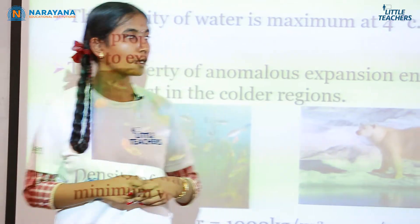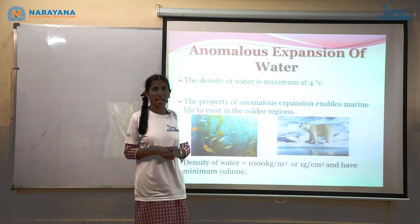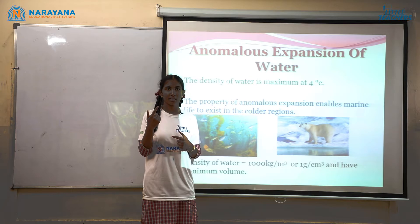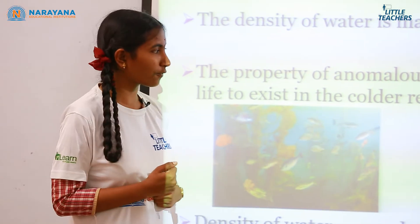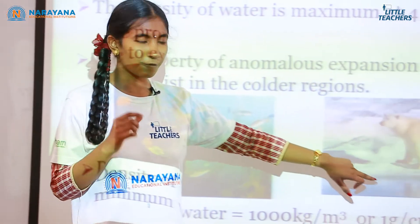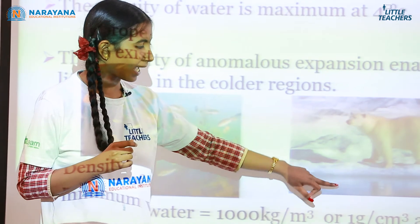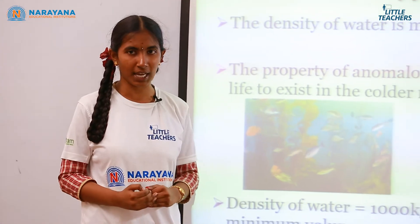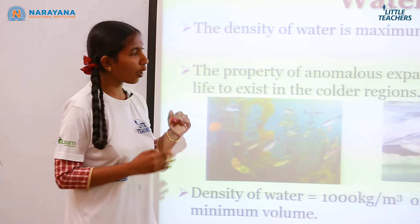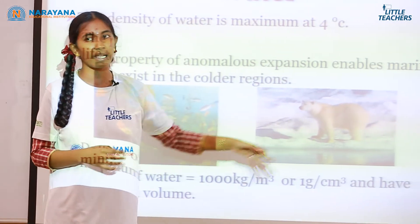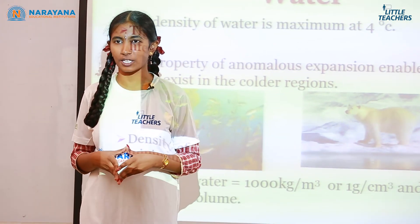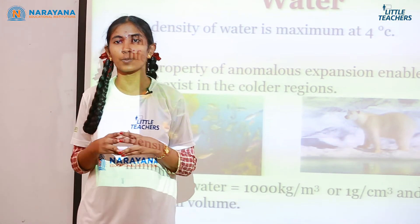And as density increases, volume decreases. Because of this, there is marine life. Since ice has lesser density, the ice floats on water and water remains below. Because of that, marine life continues underneath. On top of the ice, polar bears and many other animals are living. This anomalous expansion of water is a great and very interesting phenomenon.